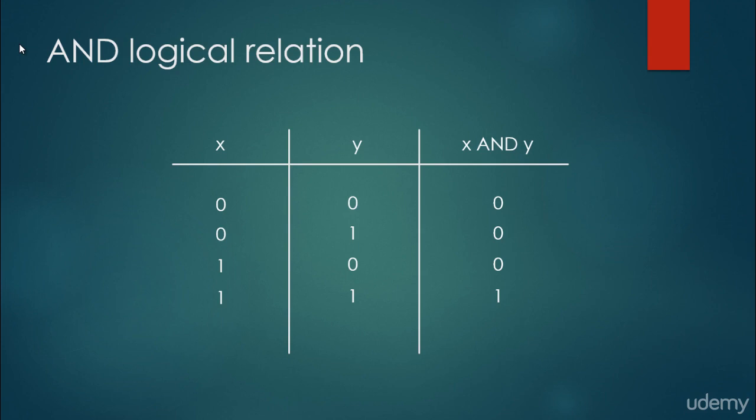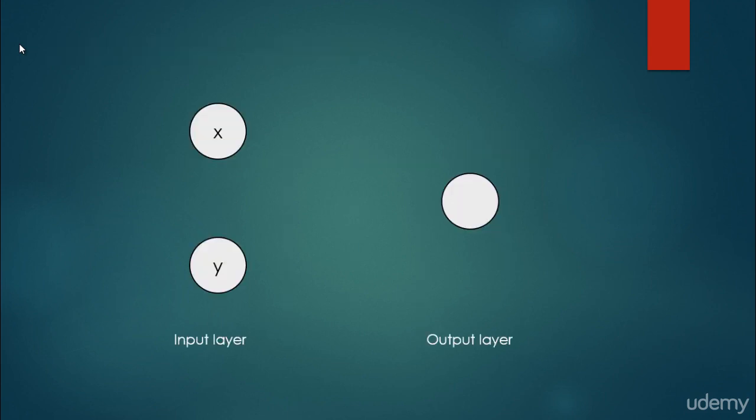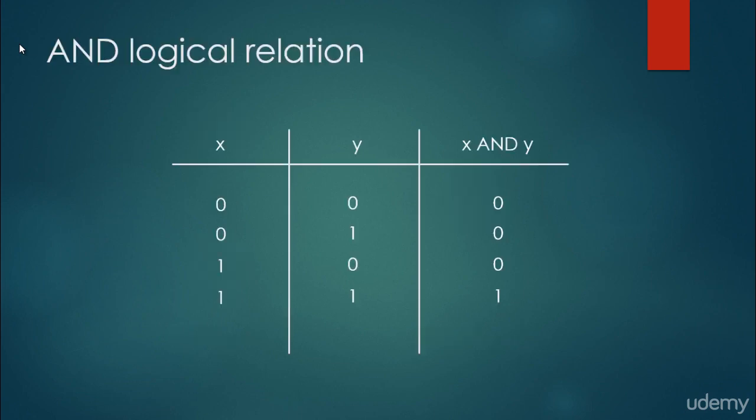So how can we construct a neural network with graph nodes and edges in order to produce something like this? We are going to have an input layer and an output layer. We do not necessarily need a hidden layer — this is a very basic situation, simple enough that we do not need any hidden layers at all. So we have an input layer with x and y, representing the two inputs as we have seen in the table.